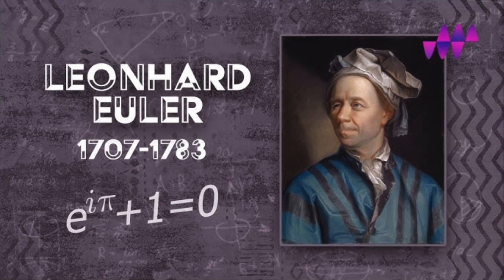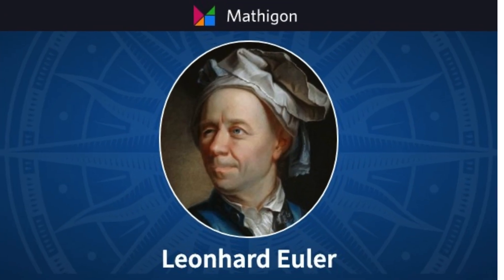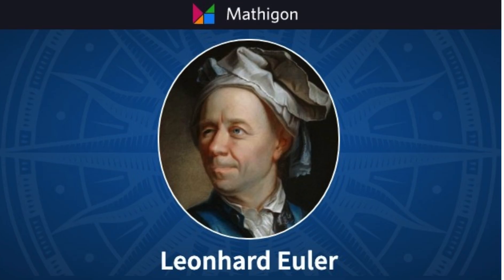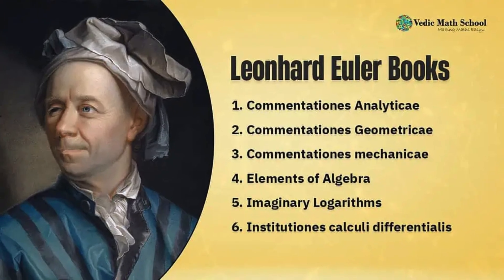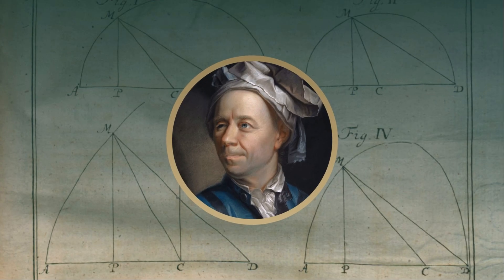Leonhard Euler was born on April 15, 1707 in Basel, Switzerland. His father was a pastor, and although his family hoped he would follow in that path, his true passion was mathematics. Euler studied at the University of Basel, where he impressed his teachers, including the famous mathematician Johann Bernoulli.